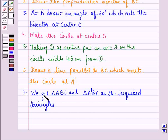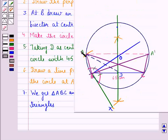Step 7 is, we get triangle ABC and triangle A dash BC as the required triangles. So triangles ABC and A dash BC are the required triangles.